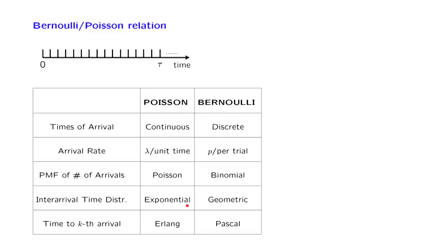As a generalization, we could find the time until the kth arrival, which in the Poisson case is given by an Erlang distribution. And for the Bernoulli case, we developed one particular formula, and that formula is actually known under the name of a Pascal distribution.